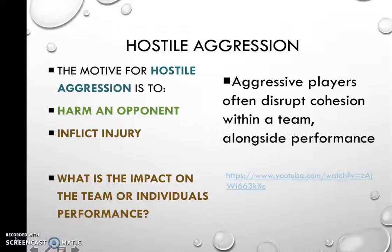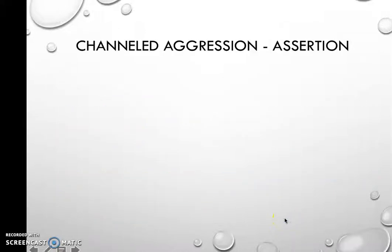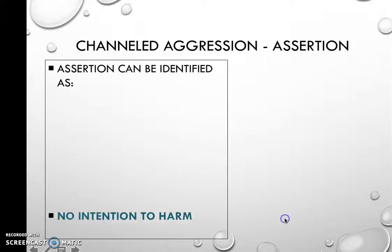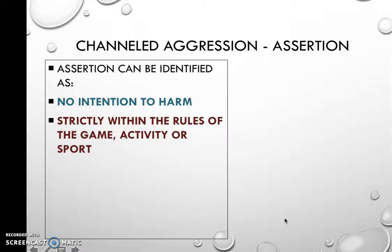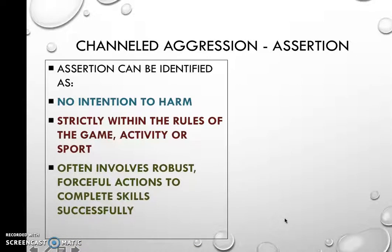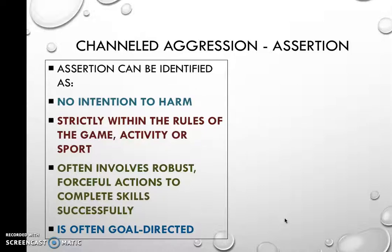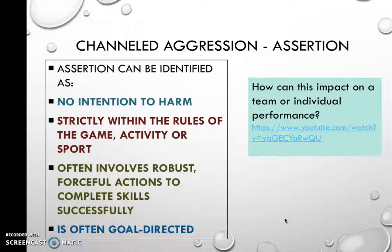That was a famous example where the intent to harm caused a negative impact on the rest of the team's performance. Now let's look at channeled aggression or assertion. This involves no intent to harm, is strictly within the rules of the game, often involves robust actions to complete skills successfully, and is usually goal-directed — towards scoring a try, a basket, or a run. You run assertively, channeled towards that goal.